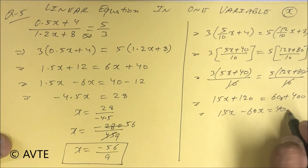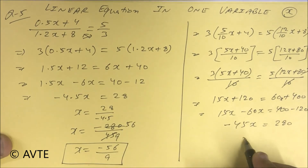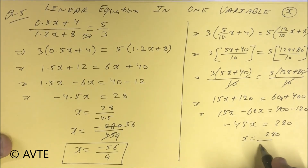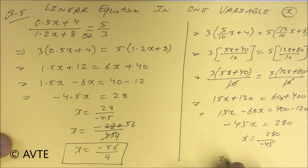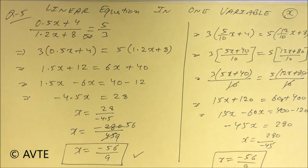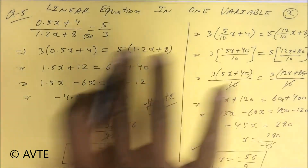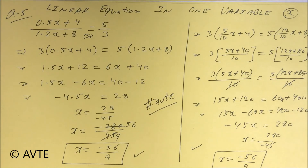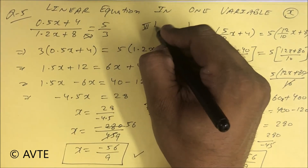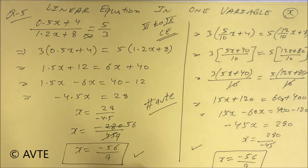That is 15x minus 60x equals 400 minus 120, so minus 45x equals 280. Therefore 280 upon minus 45 is minus 56 upon 9 — the same answer. Both methods give the same result. My advice: if you practice decimals that is good; this other way is in fractions. Keep watching our channel AVT. We have done a series of five questions in linear equation in one variable, which is important for class six to nine and all competitive examinations. God bless you all.